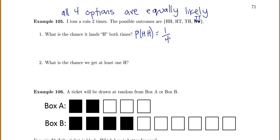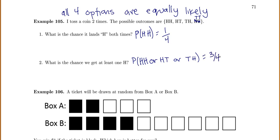For number two, what's the chance that we get at least one H? I can look at my possible outcomes: HH has at least one H, HT has at least one H, and TH has at least one H. Three of those four outcomes give me what I want, so the probability is three fourths.